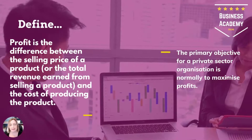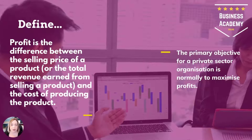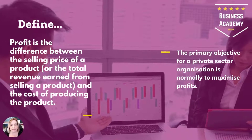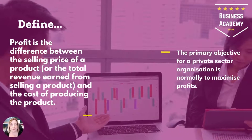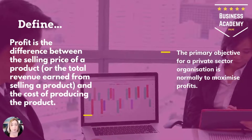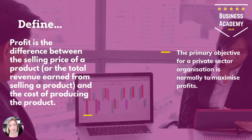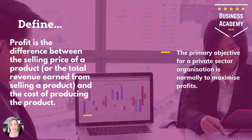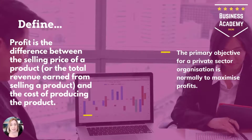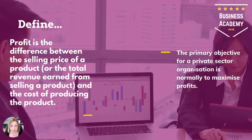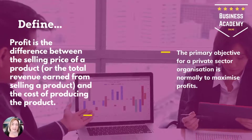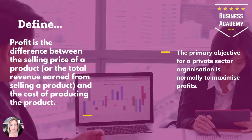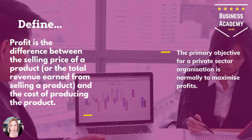I think it's important that you also talk about the primary objective: that a private sector organisation is normally all about maximising profit, as opposed to a public sector organisation, which is about spending money wisely and getting value for money. So we've started off with a definition.